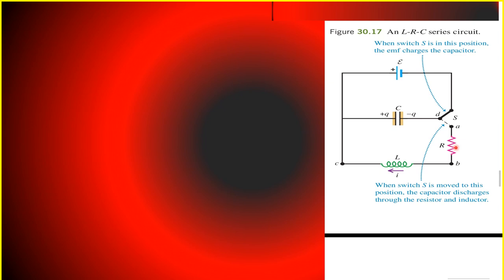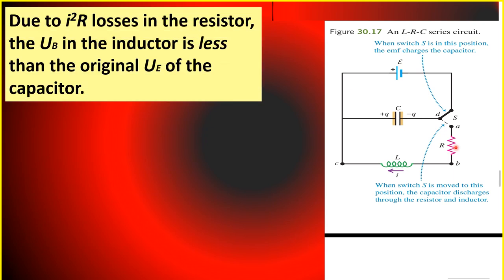As the capacitor starts to discharge as soon as the circuit is completed, there is what we call loss or losses of energy in the resistor, because of I squared R energy losses. Hence, the magnetic field energy at the inductor acquires when the capacitor is completely discharged would be less than the original electric field energy of the capacitor. In the same way, the energy of the capacitor when the magnetic field has decreased to zero will still be much less.